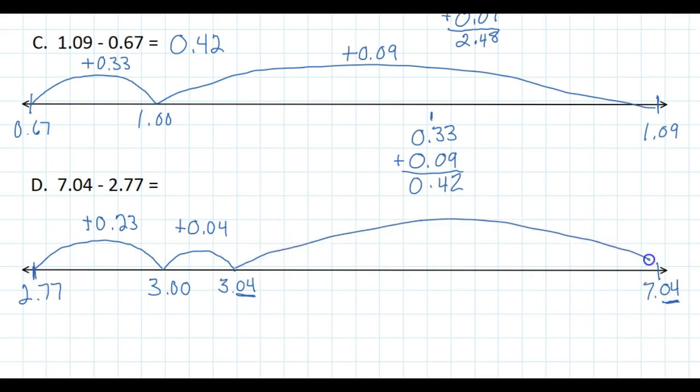So I'm going to do a big hop to the end, and that's going to be plus 4.00. Now I just add them up: 4.00 and 0.04 and 0.23. Add them up. 3 and 4 is 7, and 4 is my whole number. So my answer is 4.27.